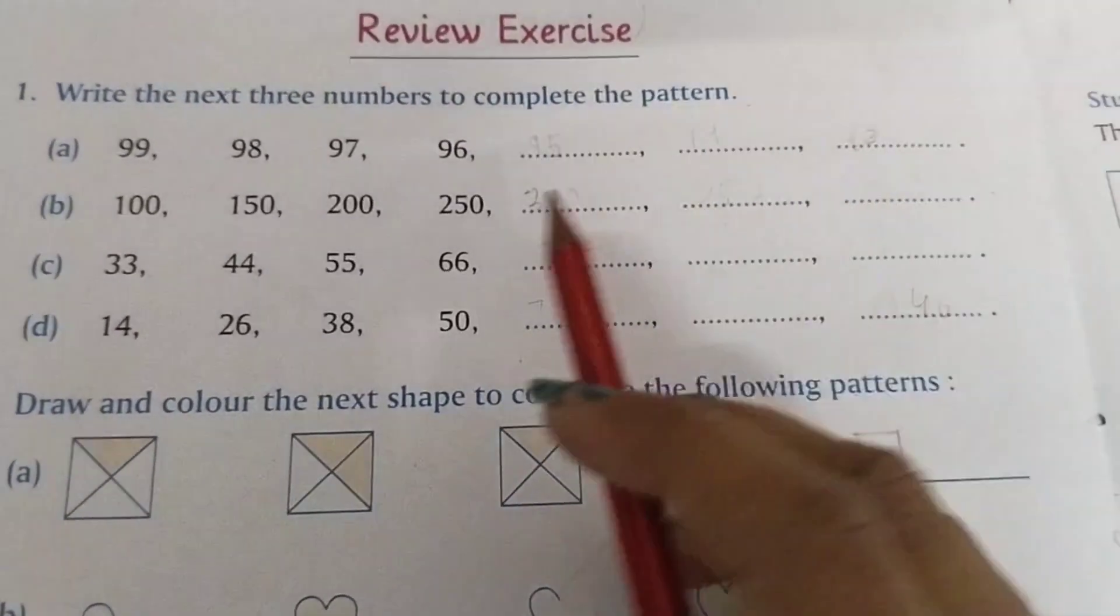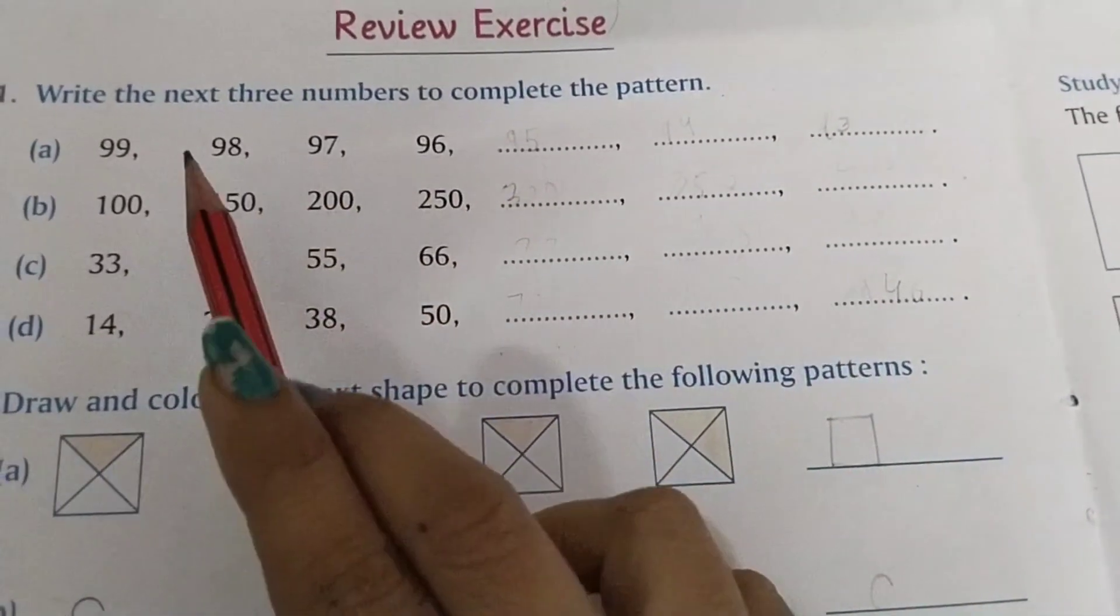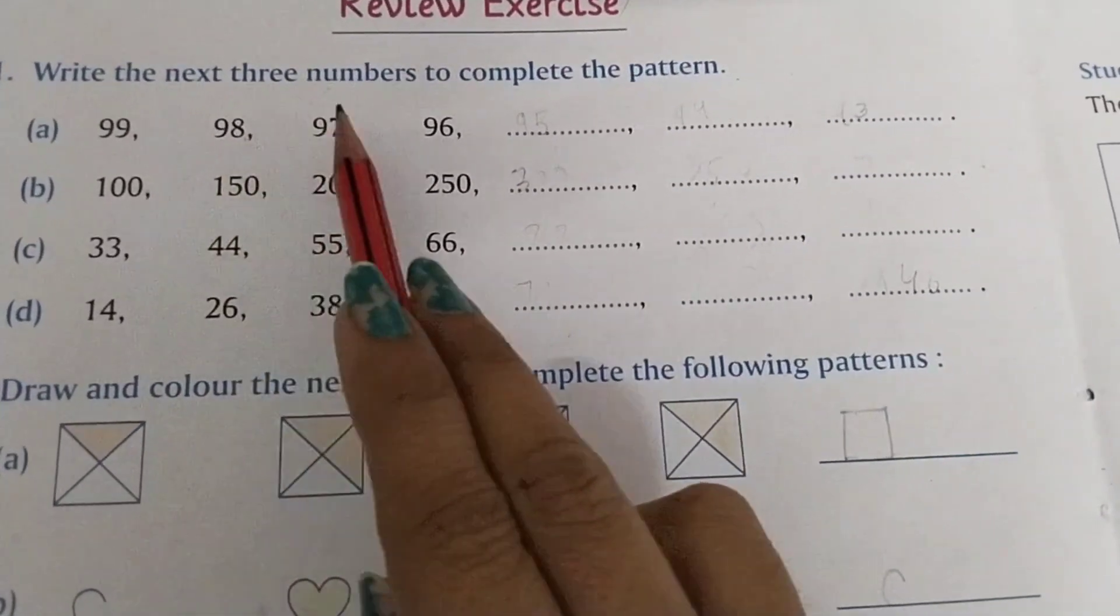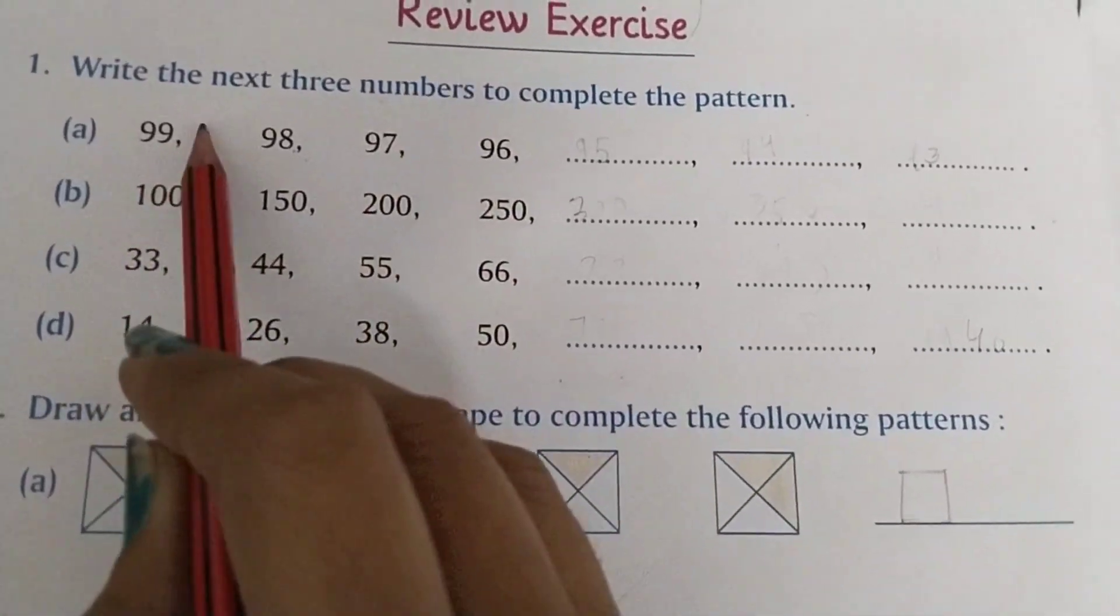Write the next three numbers to complete the pattern. 99, 98, 97, 96. It means we are coming downwards: 95, 94, and 93.